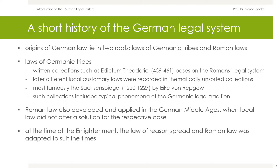next to the canon law, different local customary laws were recorded in thematically unsorted collections. The most famous one is the Sachsenspiegel, 1220–1227, by Eike von Repkow. Such collections included typical phenomena of the Germanic legal tradition, such as the payment of the so-called Wehrgeld by the perpetrator to the relatives of a killed person.